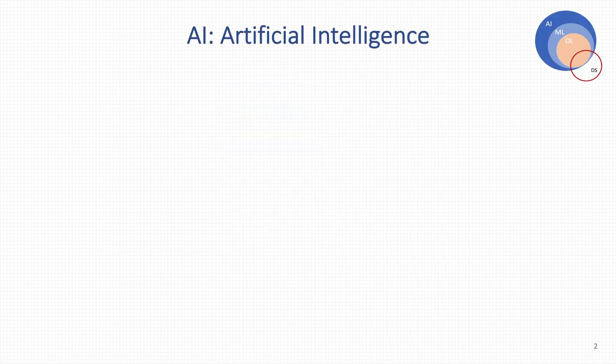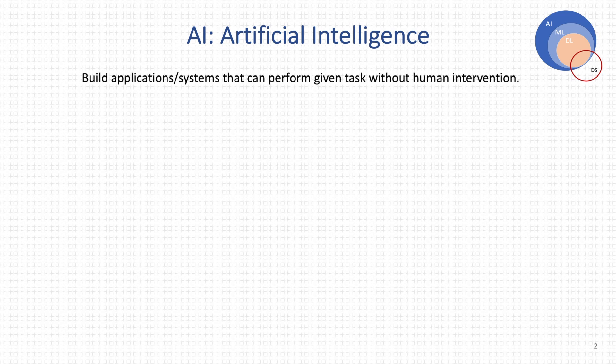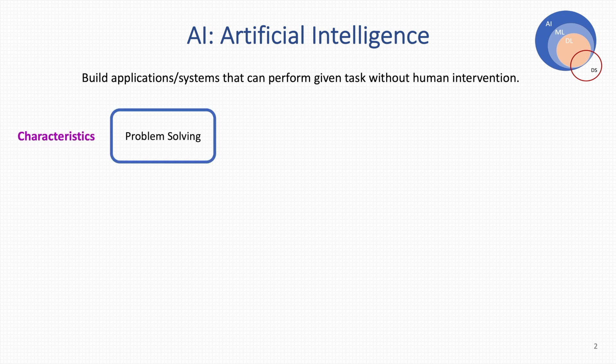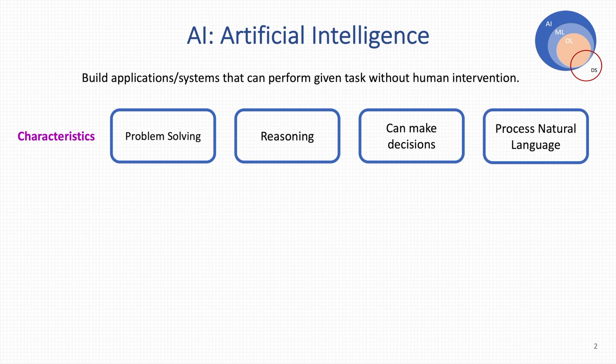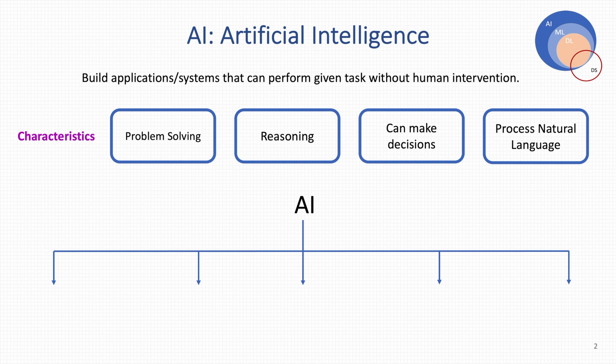First let's look at AI. AI is the most fascinating term nowadays. It is the field in which we try to mimic human behavior by developing artificial systems. It builds an application or system that can perform a given task without human intervention. Such a system should solve problems, it should have reasoning ability, decision making, and it should process natural language. These are the core characteristics of AI.